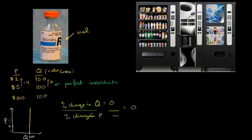Now let's go to another extreme. So this is perfectly inelastic. You can imagine, what is perfectly elastic? Something that changes a lot if you have a small percentage change in price. And to think about that, let's look at these two vending machines. You see that they both sell cans of Coke. And let's say starting off, the can of Coke costs a dollar in each vending machine.